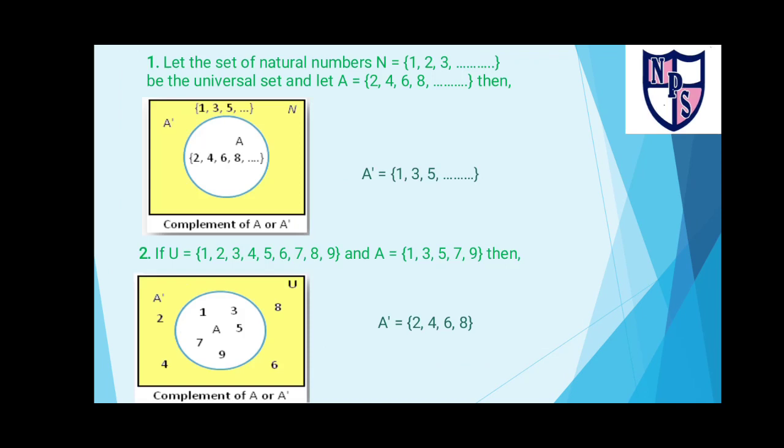In this example we have a universal set of all natural numbers and a set A which contains all the multiples of 2. Here we have to find the complement. You can see a Venn diagram of A complement. The shaded area of the rectangle shows all the elements of the universal set that are not present in set A.